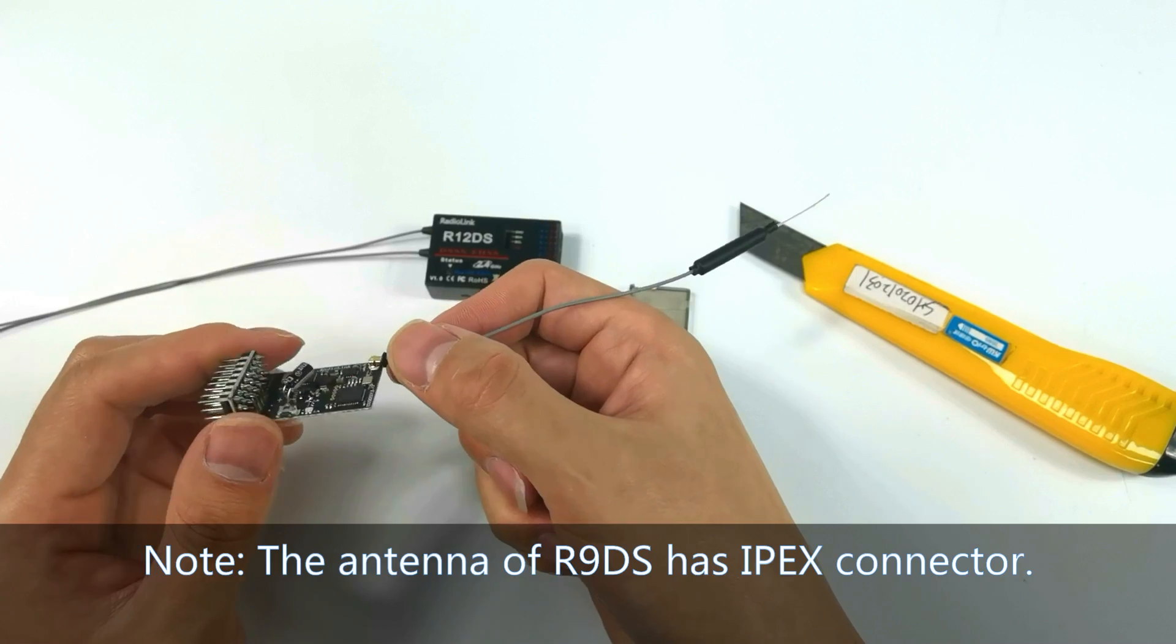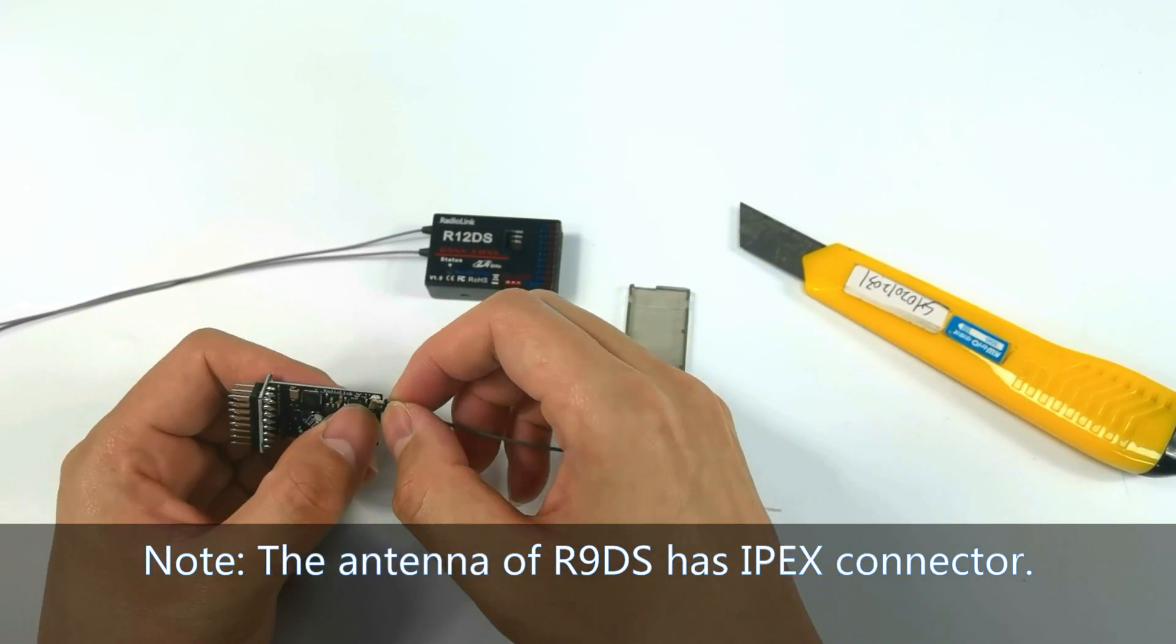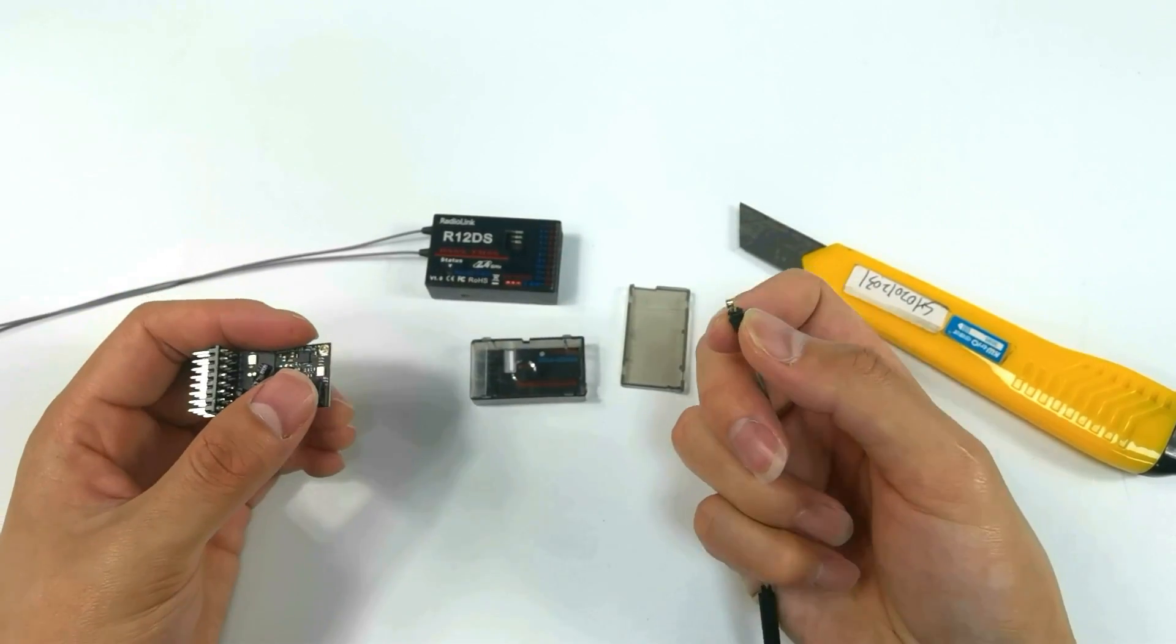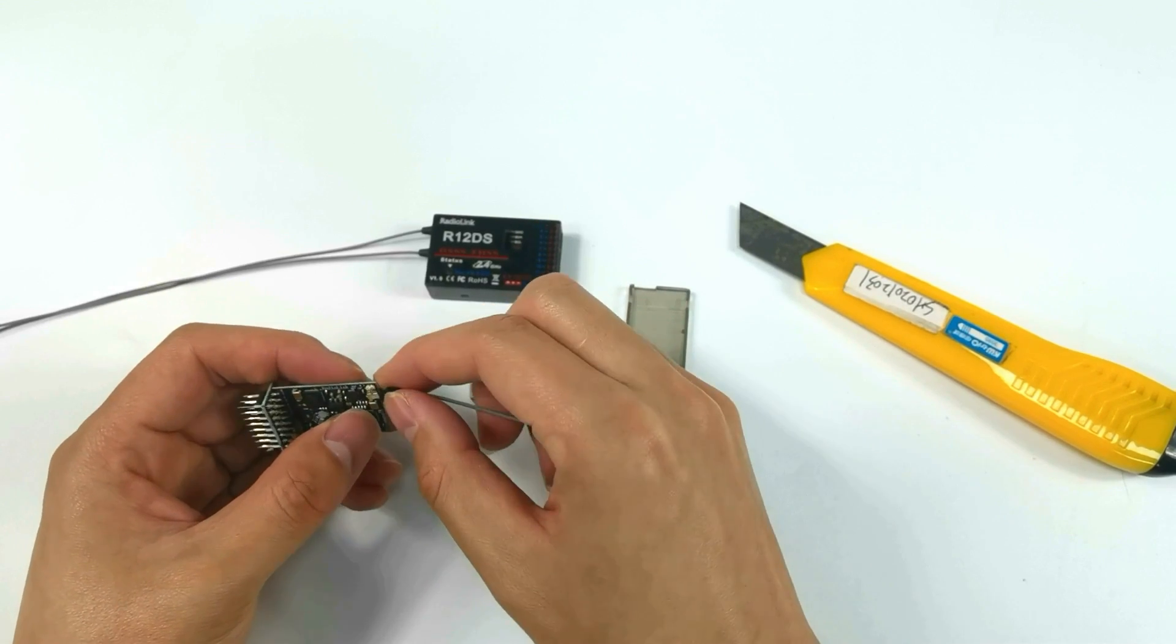The antenna of R9DS has an IPEX connector. Unplug the old antenna and plug in the new antenna.